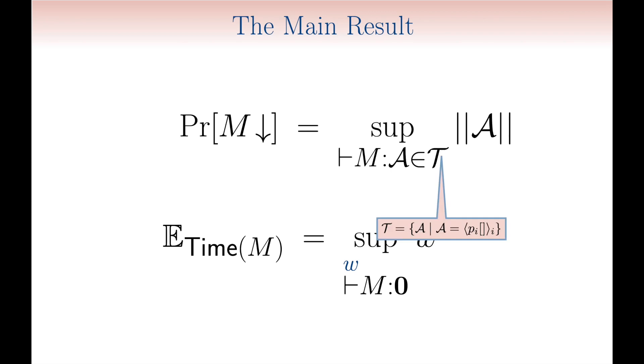First of all, the class of types which serve to characterize the probability of termination are the so-called, and already mentioned, tight types, and are simply the type distributions with support consisting of the empty multiset alone. The norm of each such tight type, instead, is nothing more than the sum of the coefficients in the type distribution.